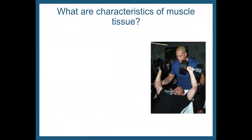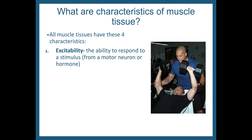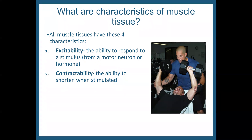Now let's talk about characteristics of muscle tissue. All muscle tissues have these four characteristics. First, excitability — the ability to respond to a stimulus from a motor neuron or a hormone. Second, contractability — the ability to shorten when stimulated.